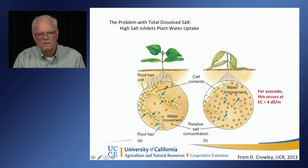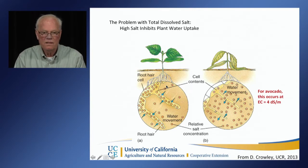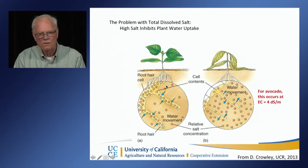Drought and salt tolerance go hand in hand in California. Many of our waters, especially along the coast, are well waters which have relatively high salinities. Even in Southern California with Colorado River water, we have problems with boron, chloride, sodium, and total salinity.